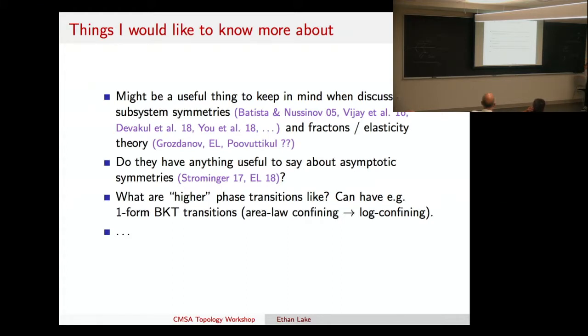They might have something useful to say about asymptotic symmetries. This is kind of a higher thing. And then, yeah, one thing I would like to know more about, I think I probably just need to read more on the literature about confinement phase transitions. But, you know, what kind of phase transitions could you have that involve these kind of symmetries? Like, it seems you can have some higher versions of BKT transitions and stuff. And I'd like to learn more about this.